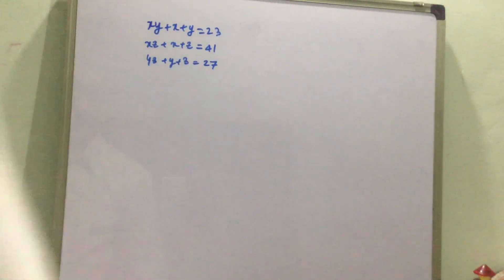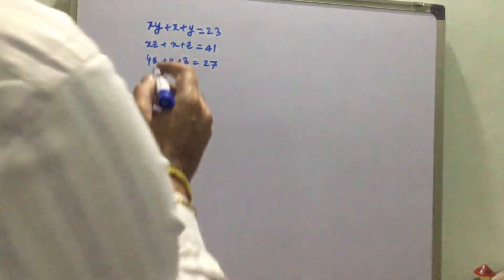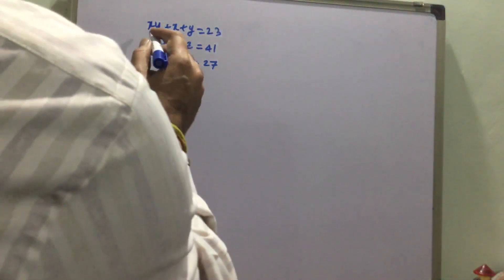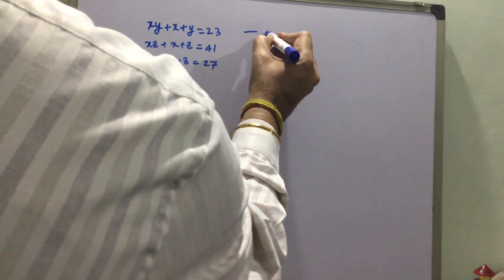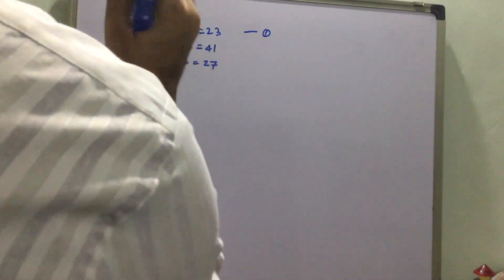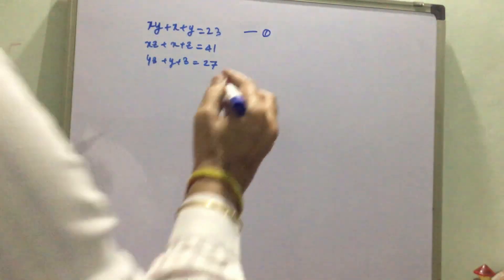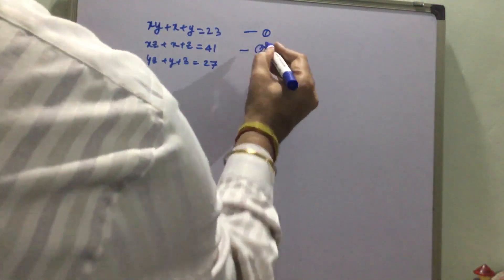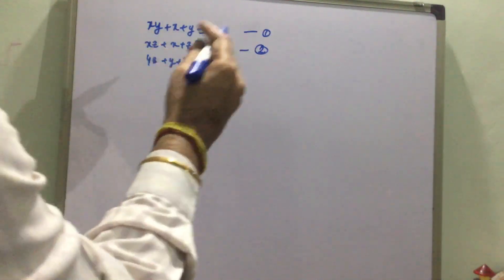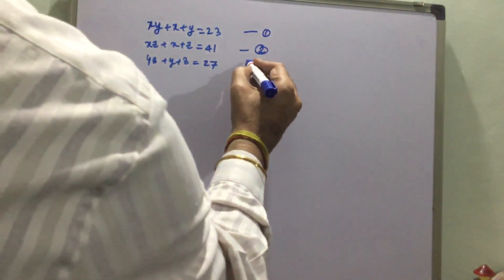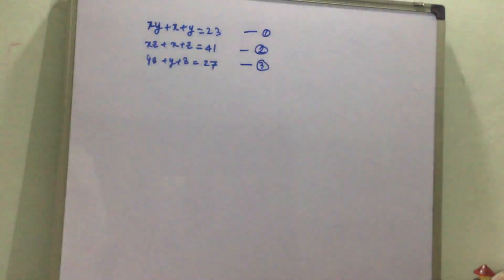Dear friends, welcome to my channel. We'll solve these three equations. First equation: xy + x + y = 23. Second equation: xz + x + z = 41. Third equation: yz + y + z = 27.